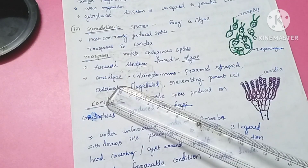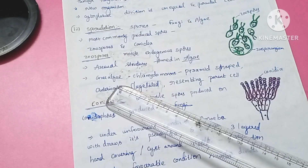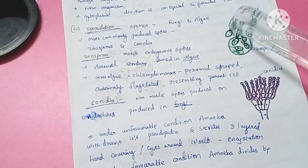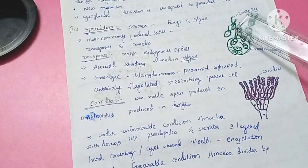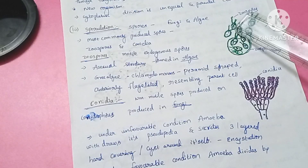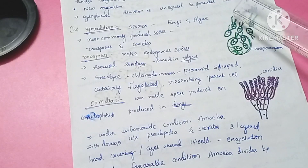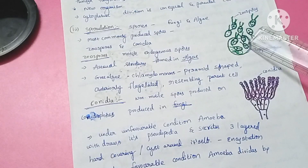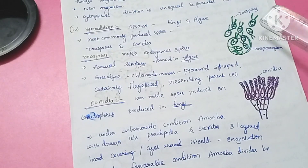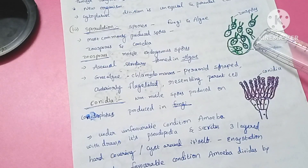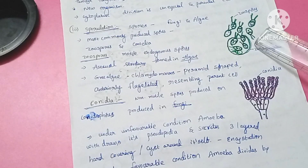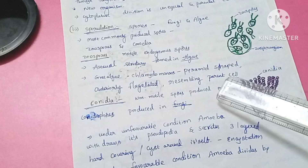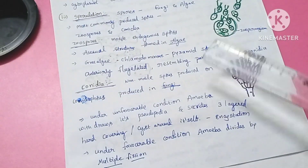Zoospores are asexual structures formed in algae and are most common in green algae like Chlamydomonas. These spores are pyramid-shaped with two flagella on the anterior side, and they resemble their parent cell.